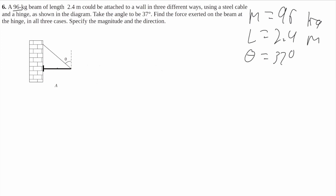So I'm going to draw the forces. This beam will have gravity from the center of mass down — this force of gravity will be mg. This cable will have tension that runs all along this cable's length; I'll call this Ft. I'm going to break it into its components: the y component and the x component. Since this is the angle, this will be Ft cosine of theta, and this will be Ft sine of theta.